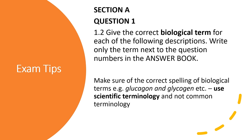If we look at question 1.2, the instruction reads: give the correct biological term for each of the following descriptions. Write only the term next to the question number in the answer book. Please make sure of the correct spelling of your biological terms. Use scientific terminology and not common terminology. Be careful of terms that sound alike, like corpus luteum and corpus callosum, chorion and choroid. Be very careful in this section and ensure that you write it down correctly.